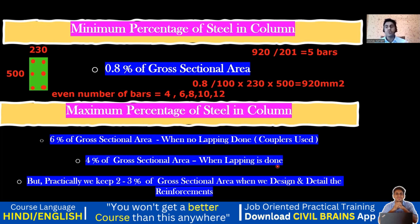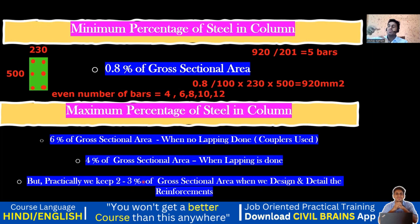Both 6 percent and 4 percent are only code book values — practically it's not possible to reach 4 percent. In practice, we keep 2 to 3 percent, with 2.5 percent being a good value. If ETABS shows 3.5 percent reinforcement, I increase the column size, which brings the steel percentage down.